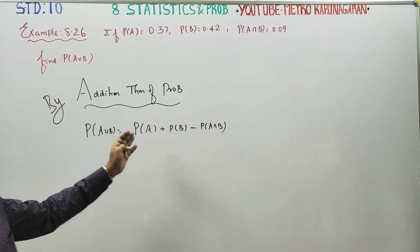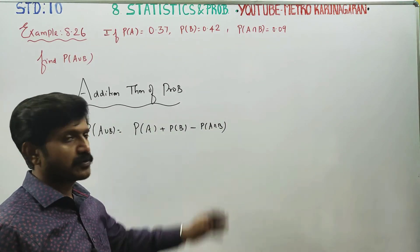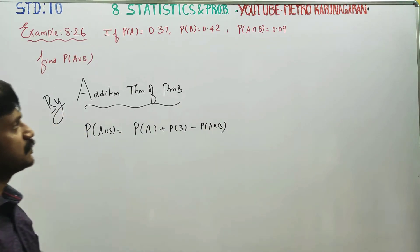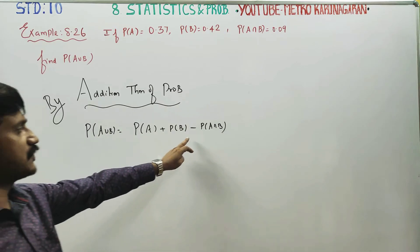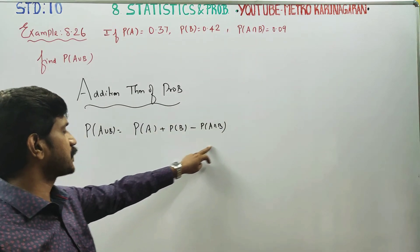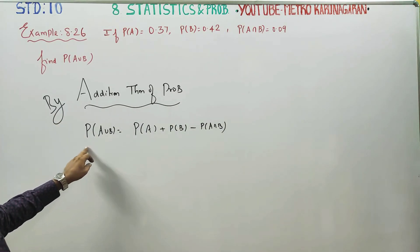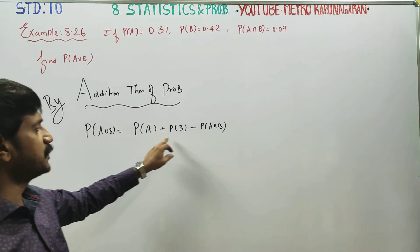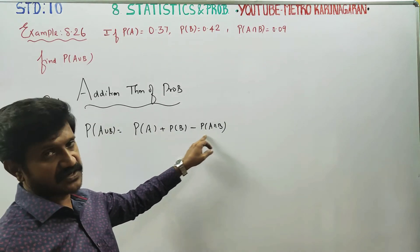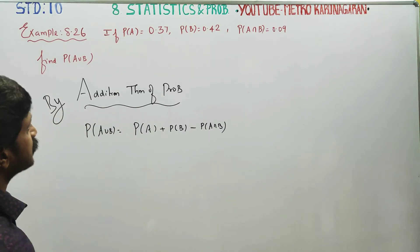Probability of A union B is equal to probability of A plus probability of B minus probability of A intersection B. From set theory, n of A union B is equal to n of A plus n of B minus n of A intersection B. That is the formula.